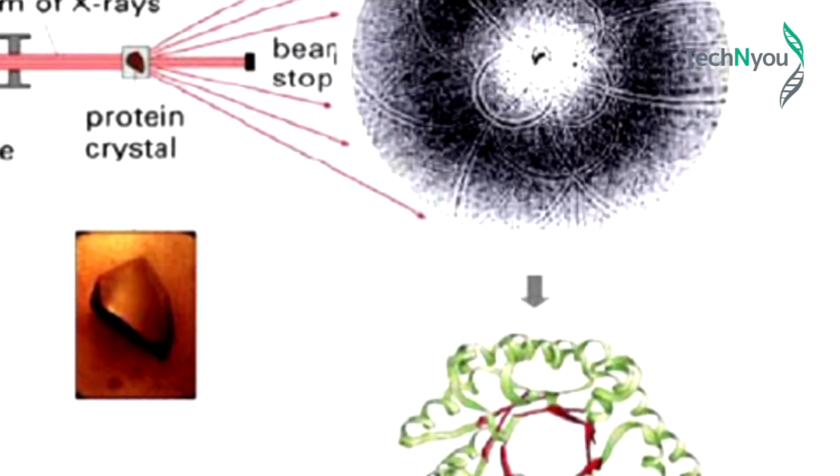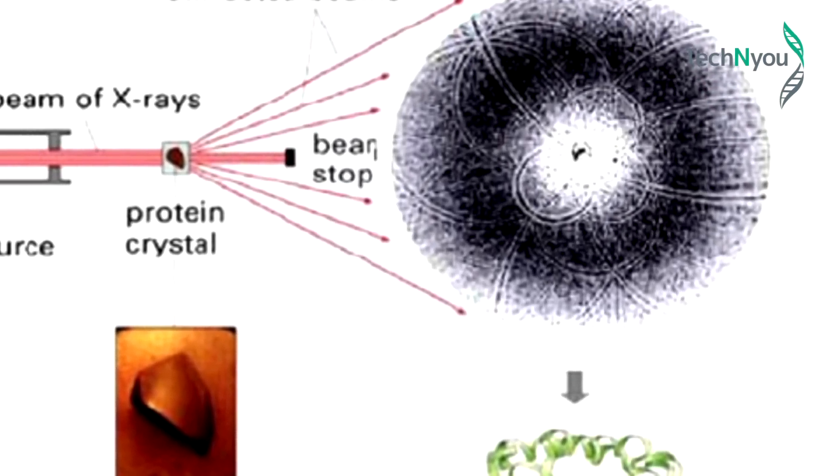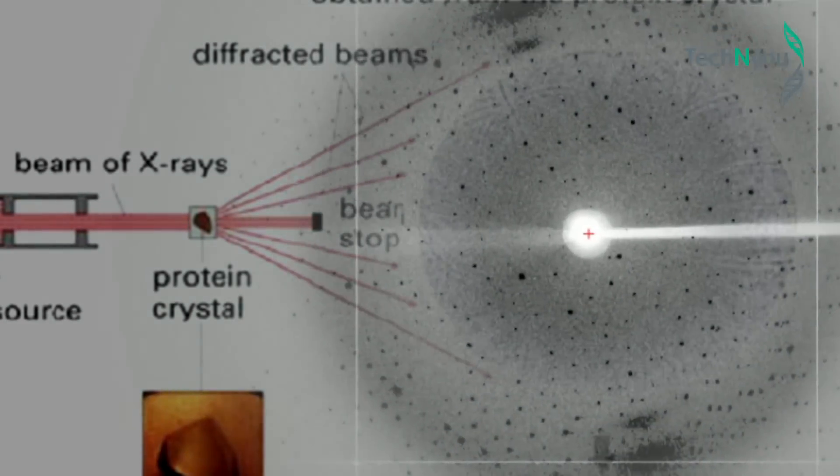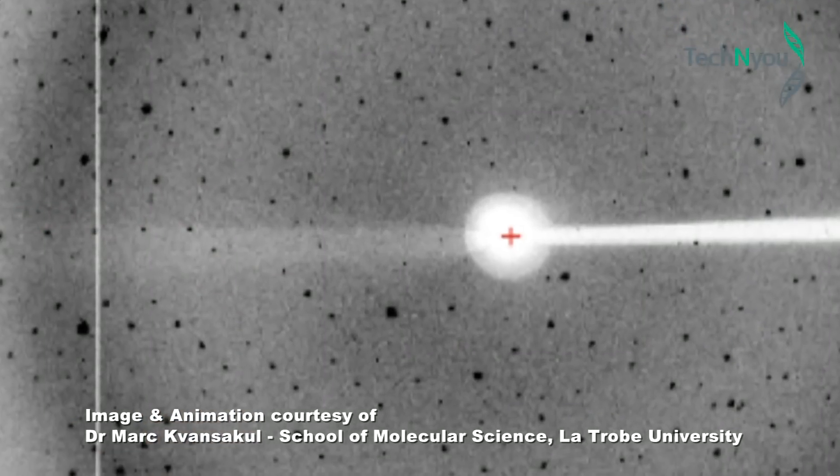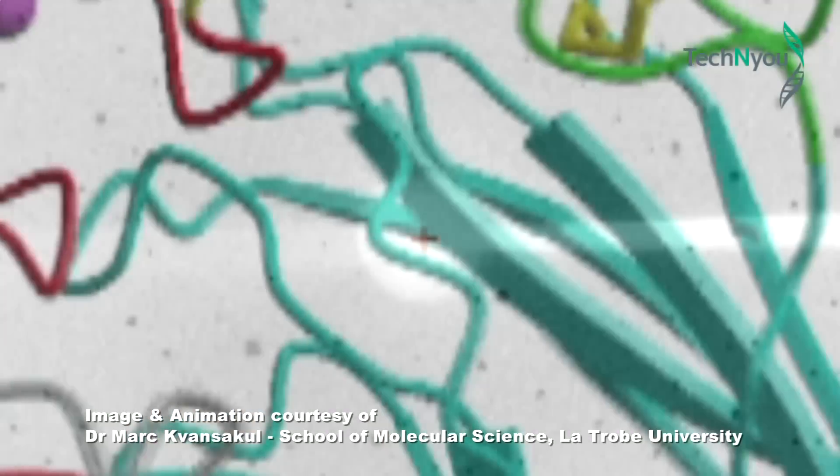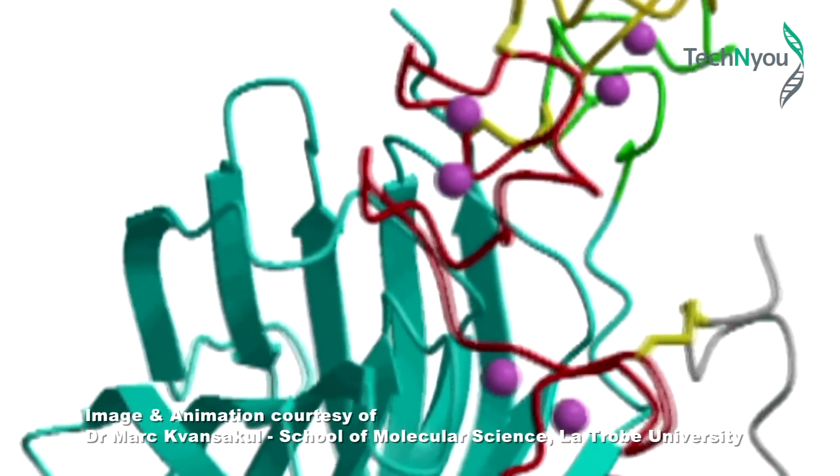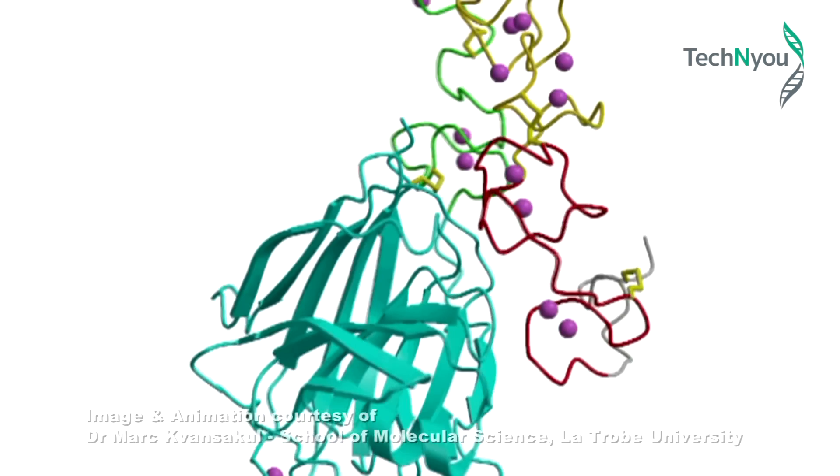A protein sample will deflect or bend an X-ray beam around itself to create a projected pattern that reveals its inner structure and dimensions. Scientists can then calculate the precise size and characteristics of the protein by measuring its image.